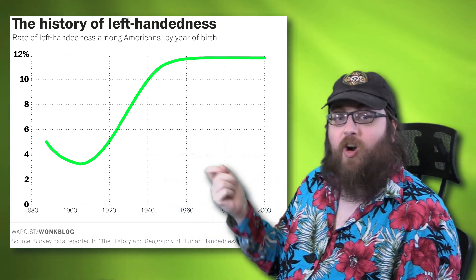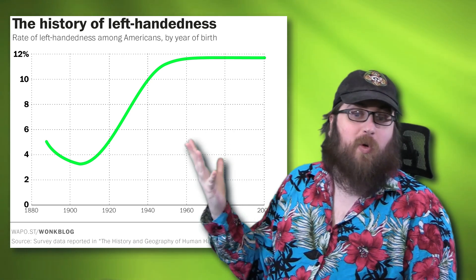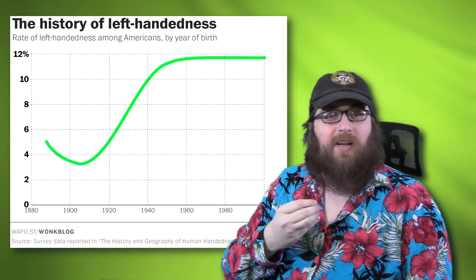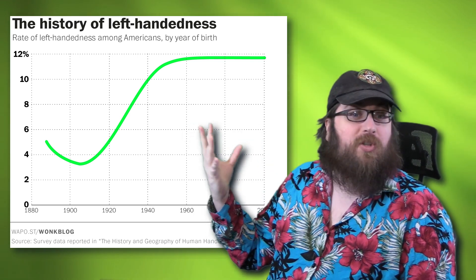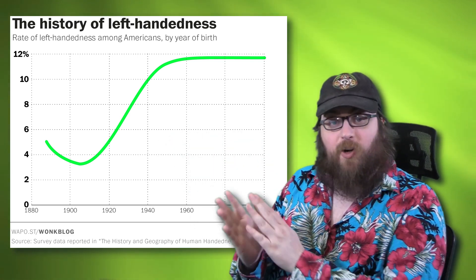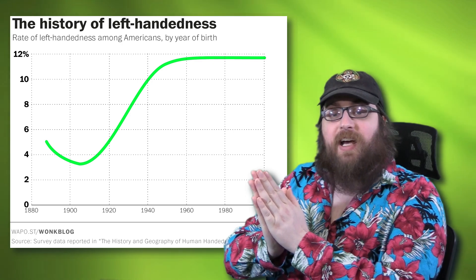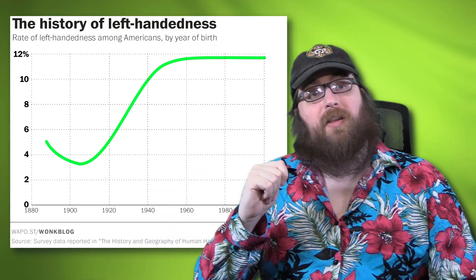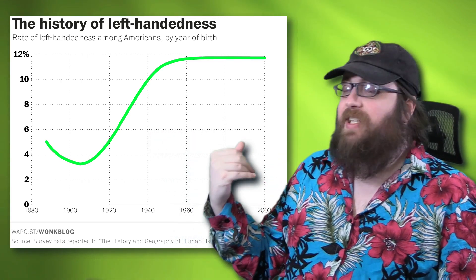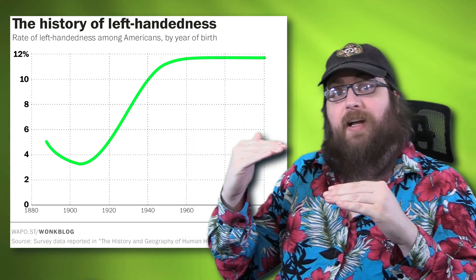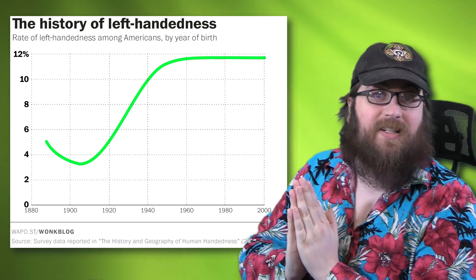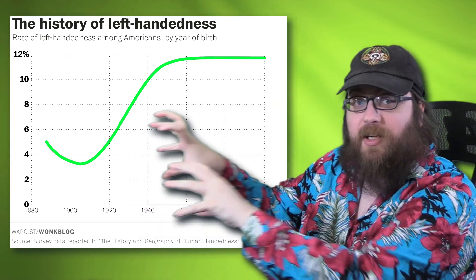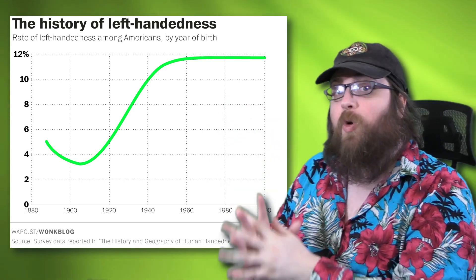It's an interesting trend, and if you're the inquisitive type, you might be wondering why. Why did we have such a huge surge of left-handedness in the early 1900s, and why did that growth suddenly stop? The first important thing we can learn from this chart is how to read between the lines, because there's actually some hidden information here that we can extrapolate just from what we already have.